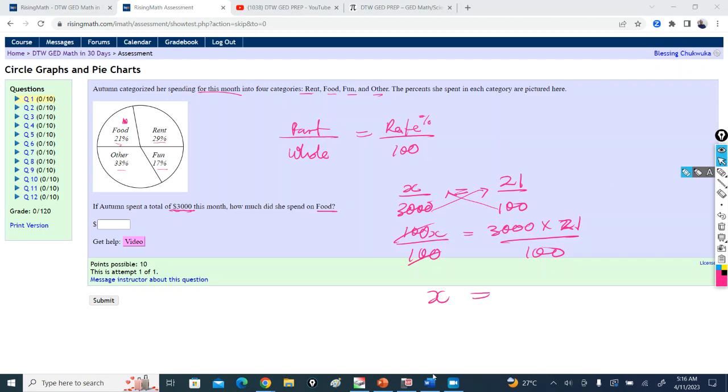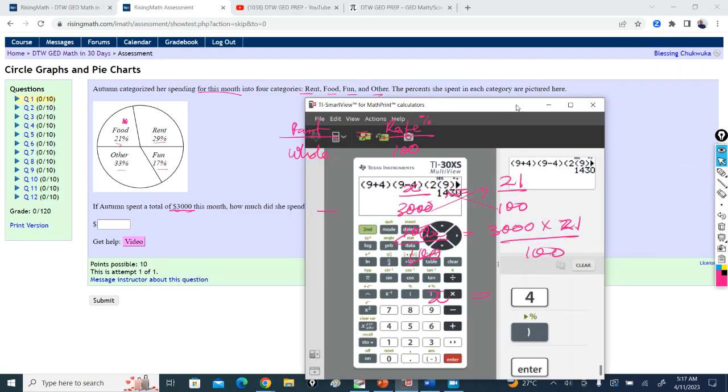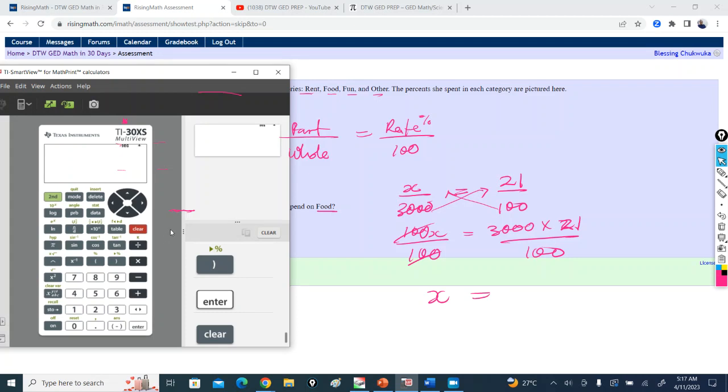Now we have to punch in our calculator. Let me bring up our GED calculator. This is our GED calculator here. Let me clear here. I always teach students how to use their GED calculator because it's quite important. So here we have 3,000 times 21, then we divide by 100. Enter. So the amount she spent on food is $630. This is the amount she spent on food.